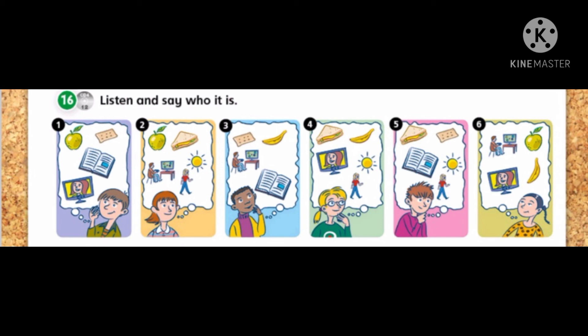Number 5. He wants a sandwich and a biscuit. He wants to read a book and go for a walk. It's number 5.